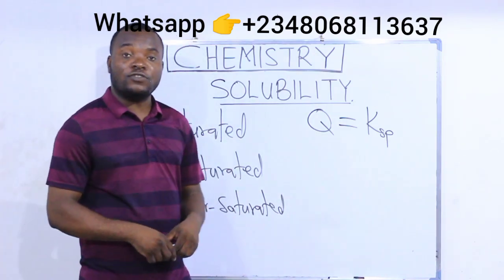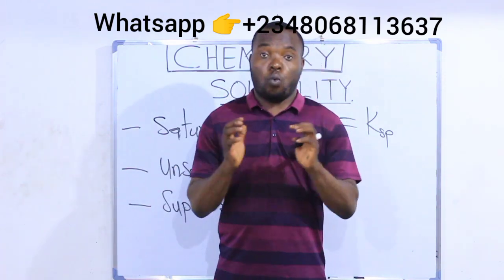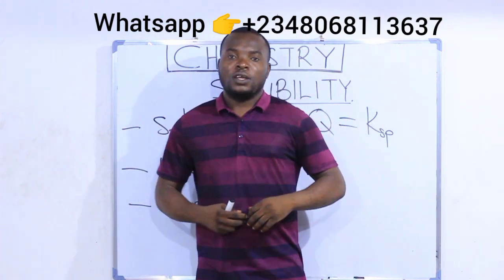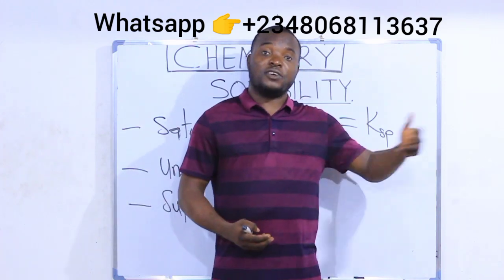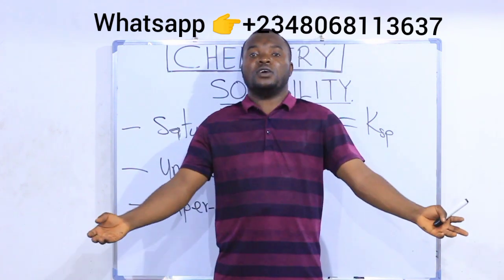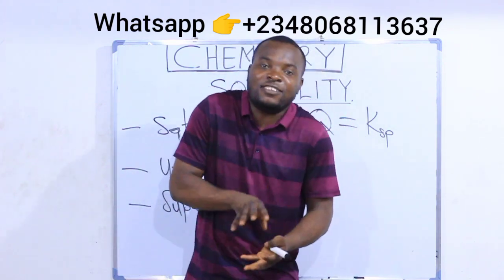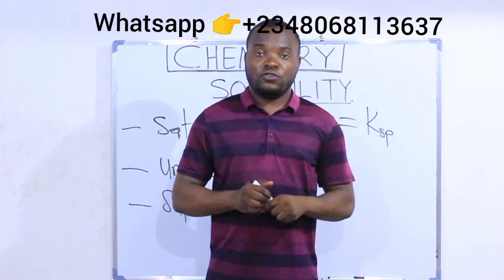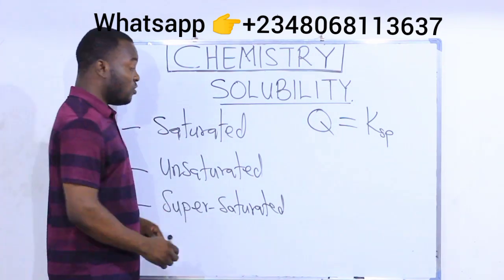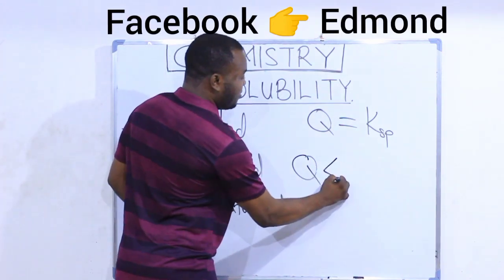When you say a solution is unsaturated, it means the solution contains less than the quantity of solute it can dissolve. Let's assume at a given temperature the solution is able to dissolve 10 grams, but the quantity dissolved inside it is just 7 grams — the solution has not taken enough solute. This type of solution that contains less than the quantity of solute it can dissolve is called an unsaturated solution. For an unsaturated solution, Q is less than Ksp.